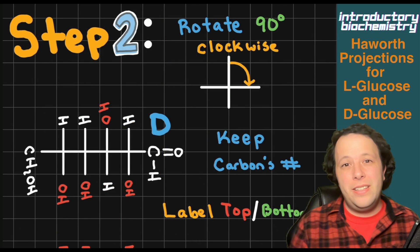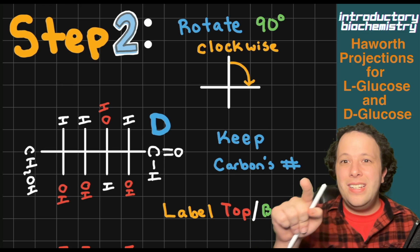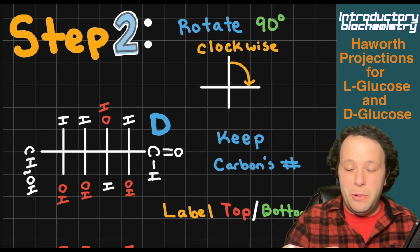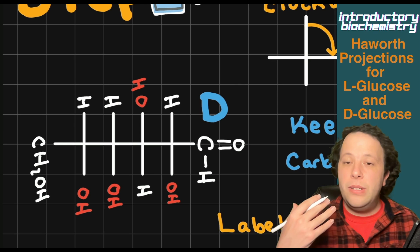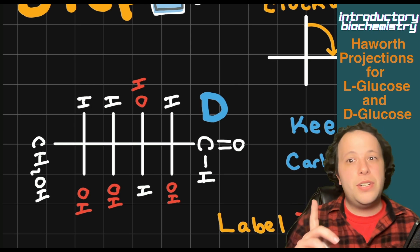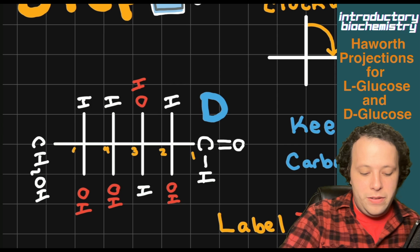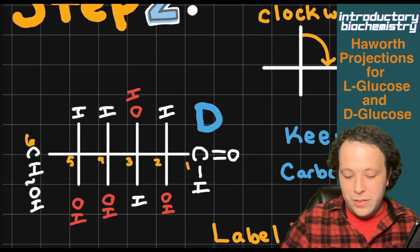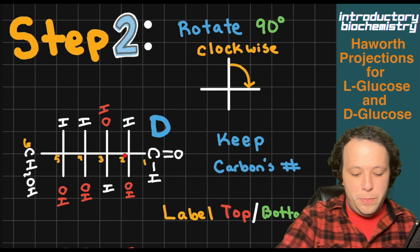Our next step is all about rotating the Fischer projection. We're going to rotate it 90 degrees to the right. The reason we're doing this is so it helps us see a couple of things. First, we want to make sure we keep all of our carbons numbered — one, two, three, four, five, six. It's really important to see where all your OHs are going to be going, because it matters if they're top or bottom on your final structure. Notice how we have some OHs on the bottom of our structure, and if we imagine a little border line, we have some on the bottom and some on the top.